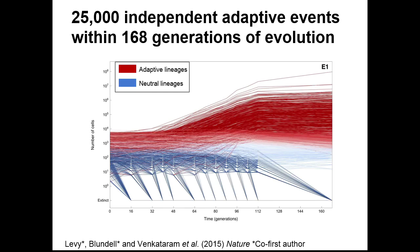What I show here are frequency trajectory plots, where we track the frequencies of barcodes over the course of an evolution experiment — time on the x-axis in generations, and on the log scale on the y-axis, the number of cells estimated to contain each barcode. Each line represents the frequency of one barcode over the course of evolution. The ones in red are believed to contain adaptive mutations based on these frequency trajectories, while those in blue are neutral.